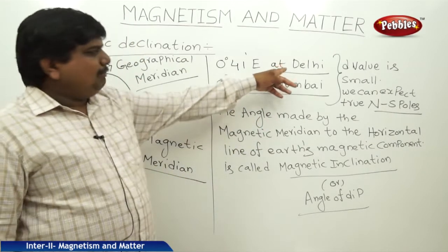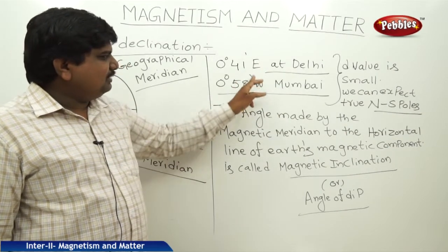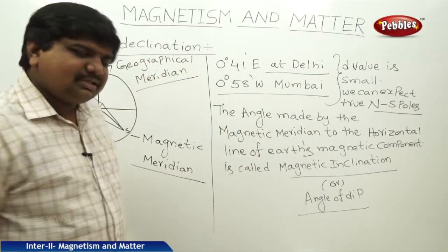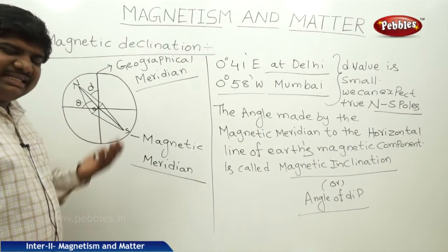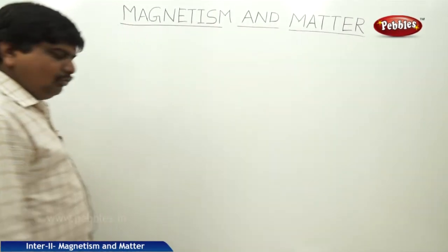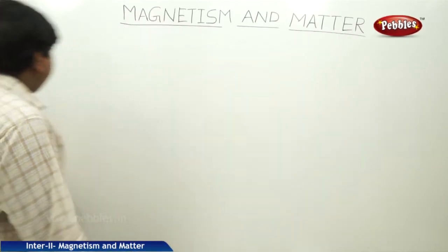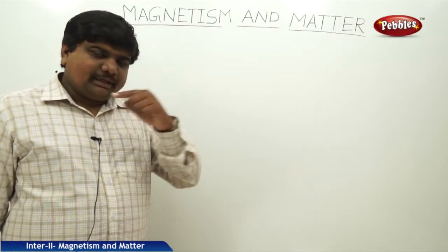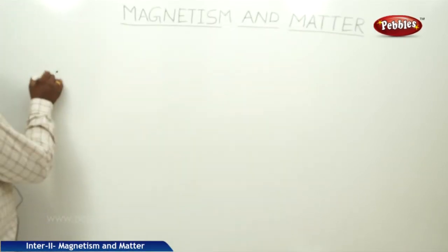In India, the magnetic declination value is 0 degrees 41 minutes east at Delhi, and 0 degrees 58 minutes west at Mumbai. The declination value is very low at these two places. Now, we will discuss the relationship between inclination and declination with respect to the horizontal and vertical components of Earth's magnetic field. Let us assume a point P, with respect to the magnetic meridian and geographic meridian.